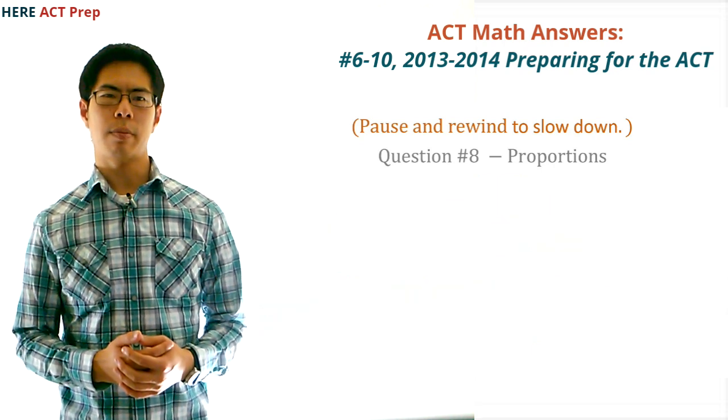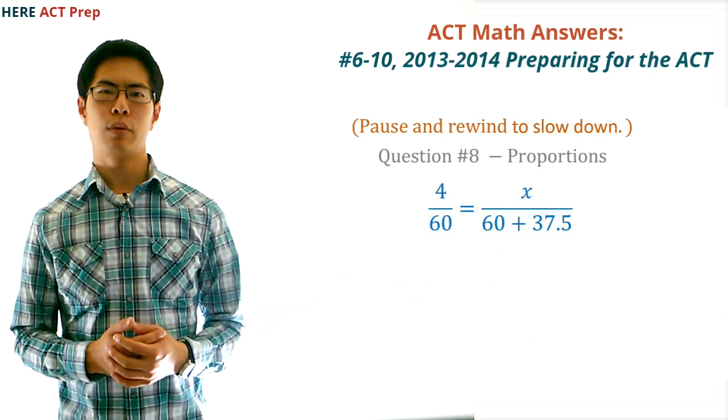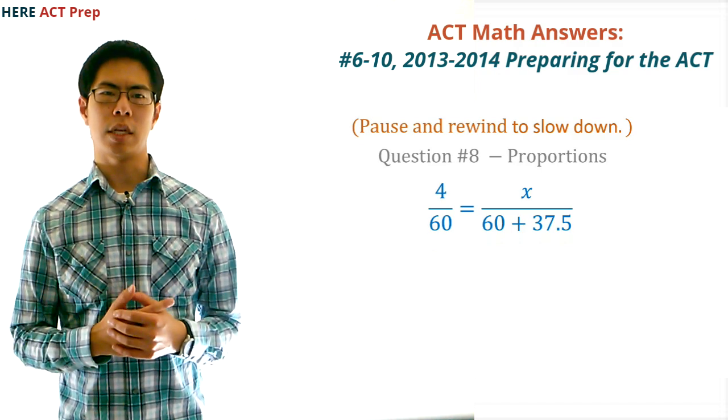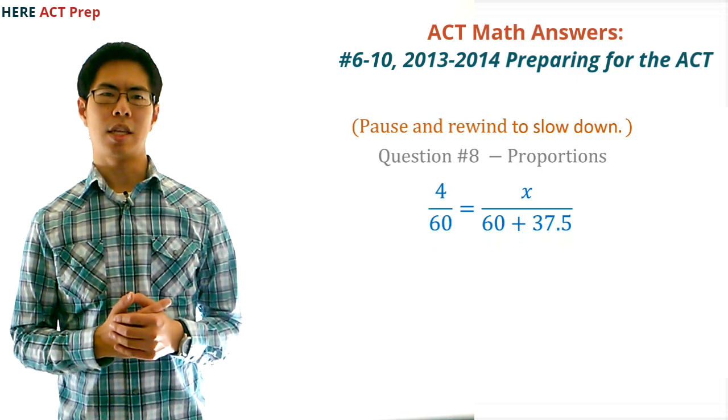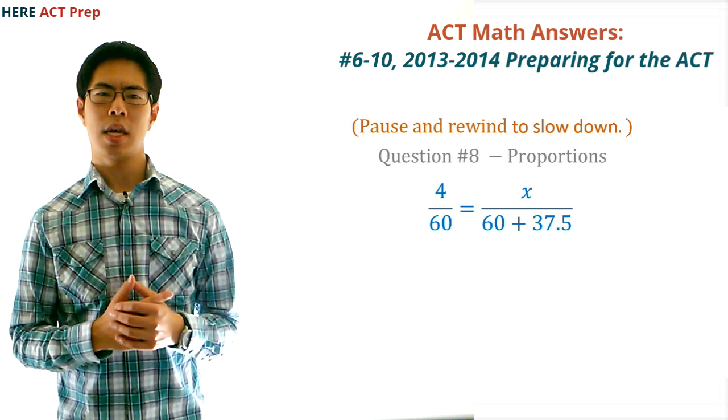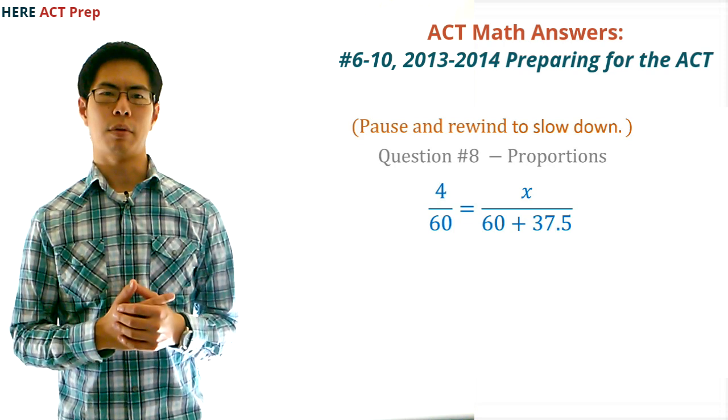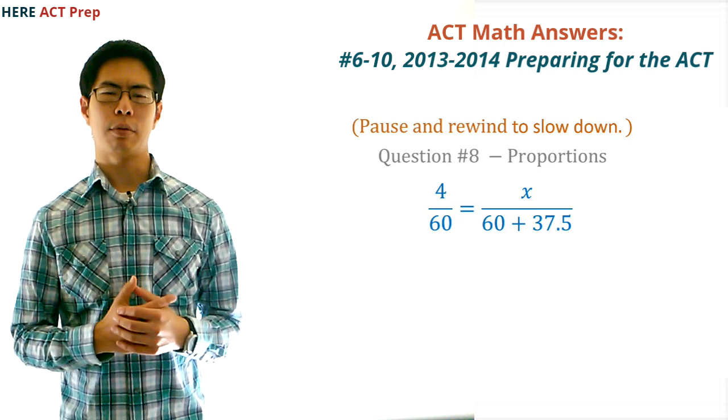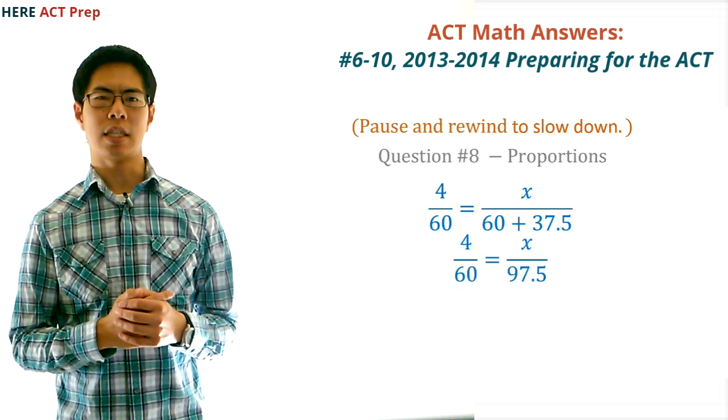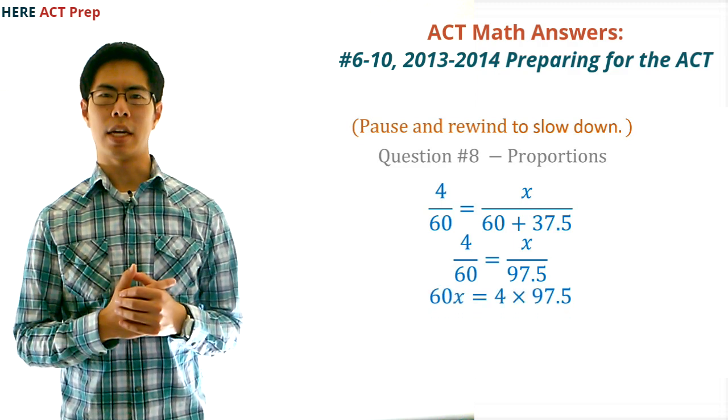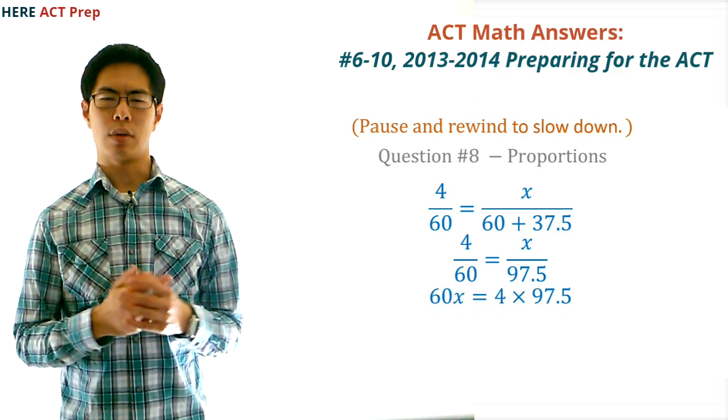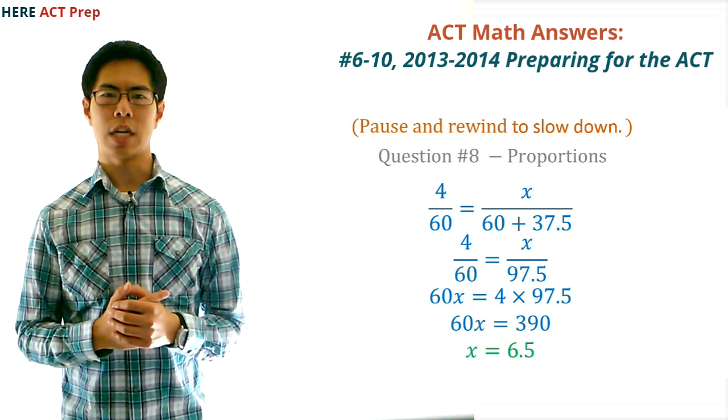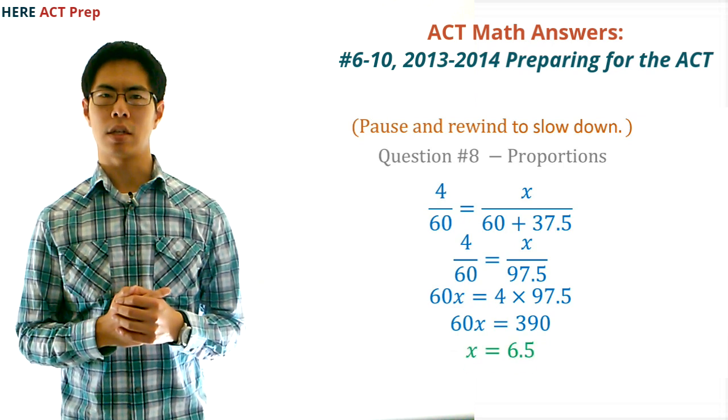Another way to do this question is to set up a proportion. In this case, one way we could set this up would be to write 4 over 60 equals x over 60 plus 37.5. The 4 over 60 represents the discounted price and the total discount cost, and the x over 60 plus 37.5 represents the regular price and the total regular cost. Next, after we add 60 plus 37.5 to get 97.5, we then cross-multiply to get 97.5 times 4 equals x times 60, which simplifies to 390 equals 60x. Finally, we divide both sides by 60 to get 6.5 or $6.50.